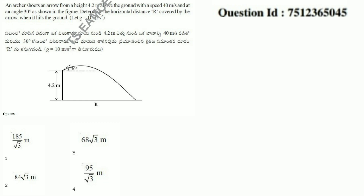So this question is: there is a tower of 4.2 meter height. An object is projected at 30 degrees at 40 meters per second.